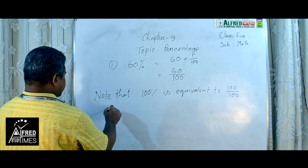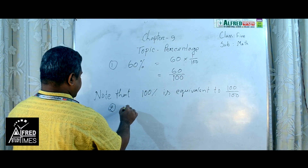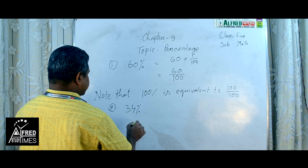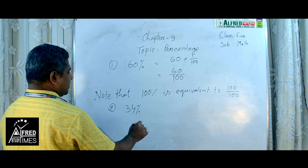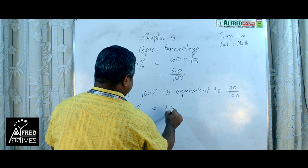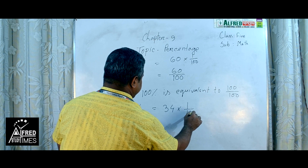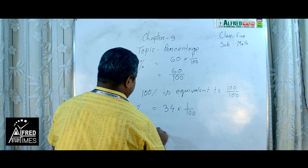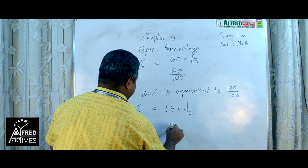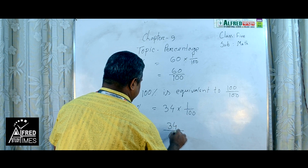Next, number 2: 30%. It will be like this — 34 into 1 by 100, or we can write it as 34 by 100.